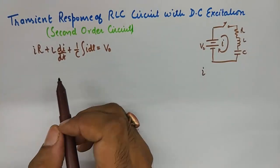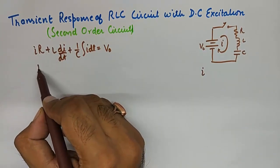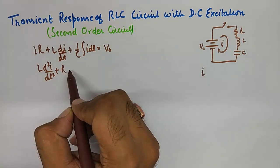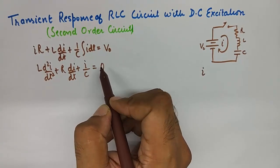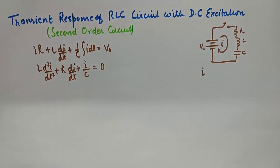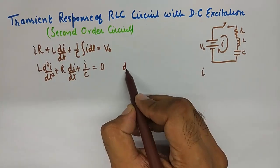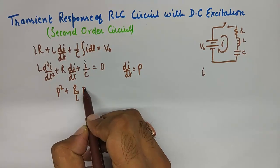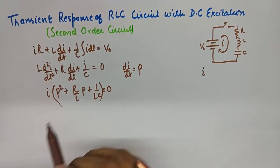Which is pretty basic. Then by differentiation we'll need to do it twice, and a little bit of rearrangement will give us this. I will substitute dI by dT by P. Let us say it is P, then we get P square plus R upon L P plus 1 upon LC is equivalent to 0.